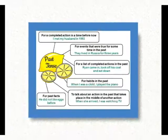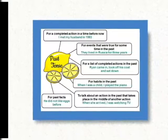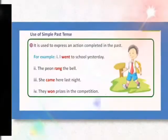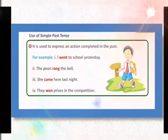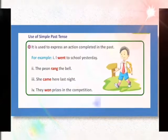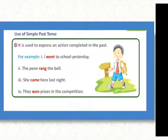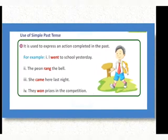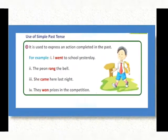For past facts: 'He did not like X before' — 'did' is the second form of 'do.' It is also used to express an action completed in the past: 'I went to school yesterday' — 'went' is the second form of 'go.' 'The peon rang the bell' — 'rang' is the second form of 'ring.' 'She came here last night' — 'came' is the second form of 'come.' 'They won the prizes in the competition' — 'won' is the second form of 'win.'